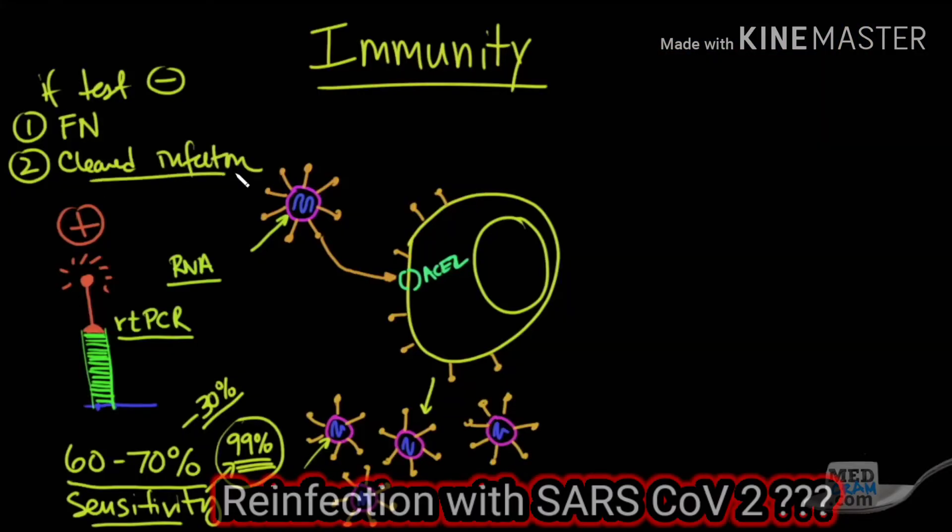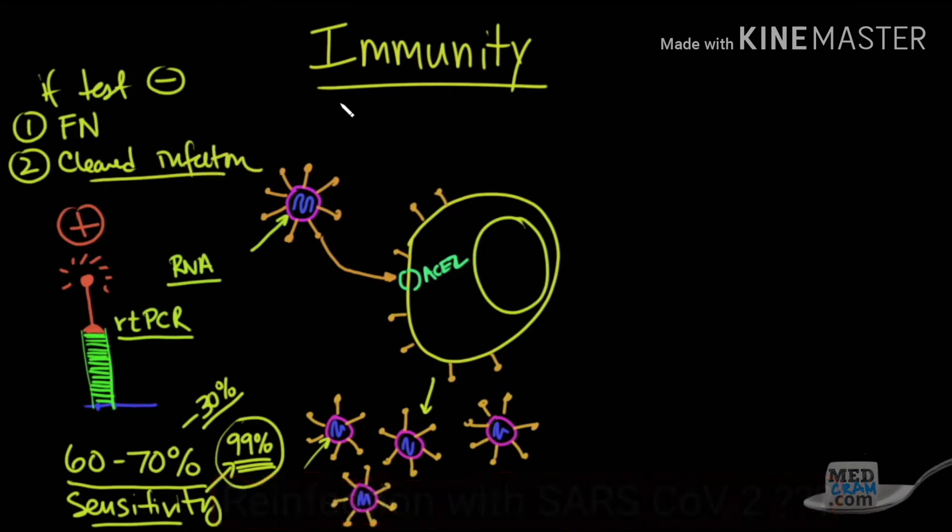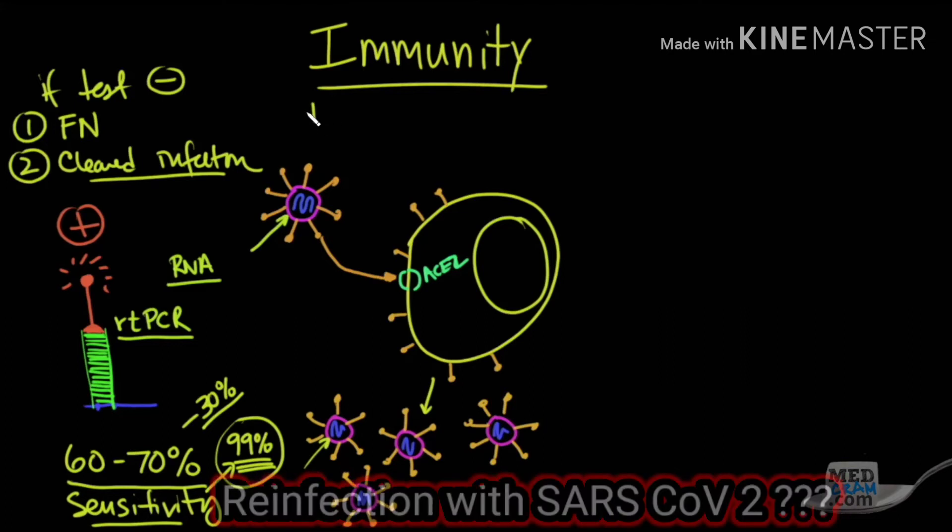And here comes the issue with regards to reinfection, and that's been the real key question up to this point. If you do serial testing on somebody and you get something that looks like this,